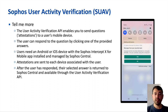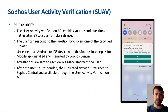The User Verification API lets you send questions — or what we call attestations — to a user's mobile device. The user can then respond to that question by clicking one of the provided answers. The user will need an Android or iOS device with the SoPos Intercept X for Mobile app installed, and it must be managed by SoPos Central. If the user has more than one mobile device, the attestations are sent to each device associated with that user. Once they've responded, their answers are sent back to SoPos Central and retrievable using the Suave API.